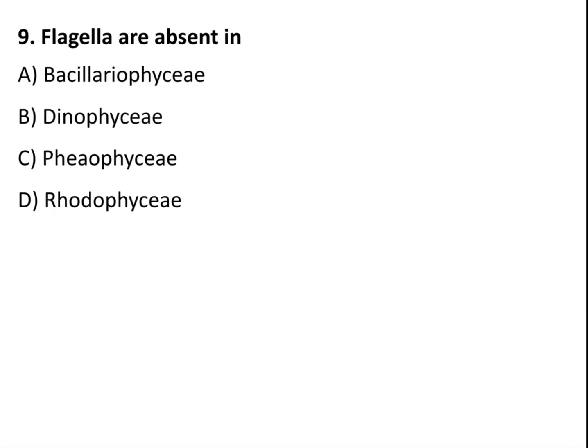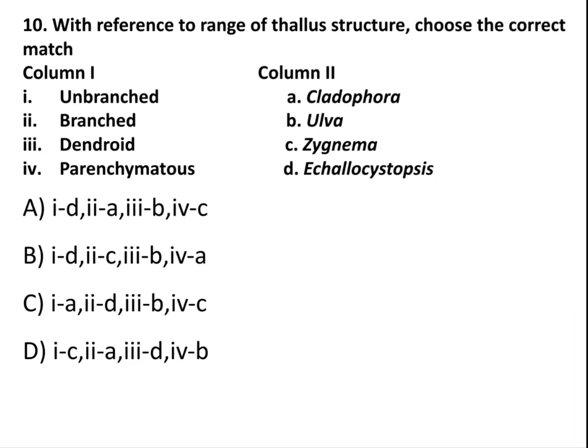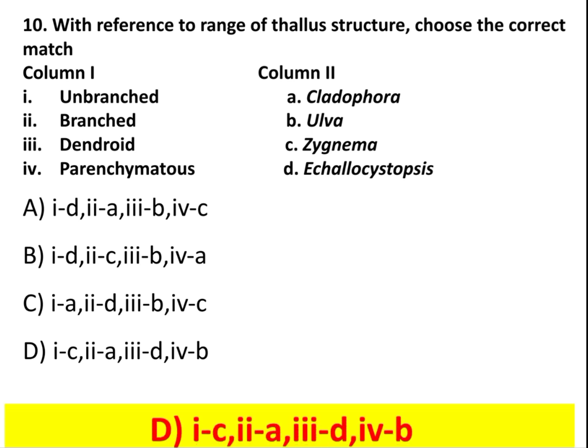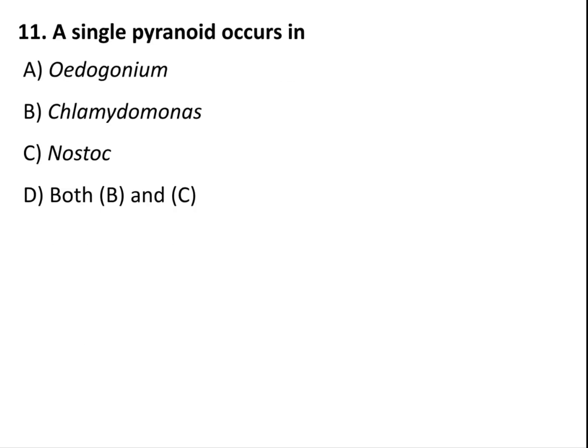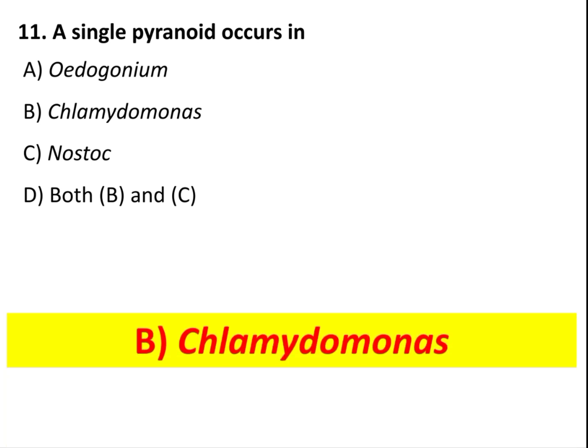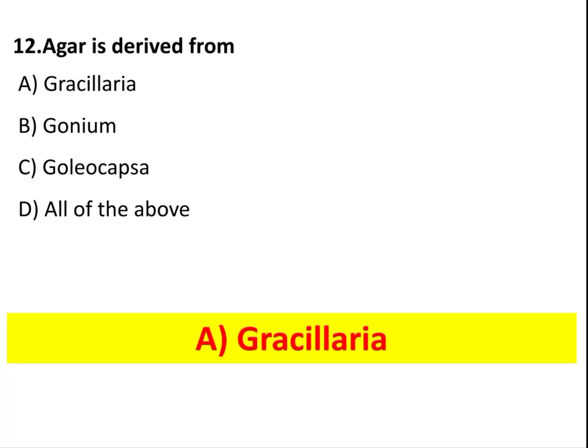Flagella are absent in Rhodophyceae. With reference to range of thallus structure, choose the correct match. A single pyrenoid occurs in Chlamydomonas. Agar is derived from Gracilaria.